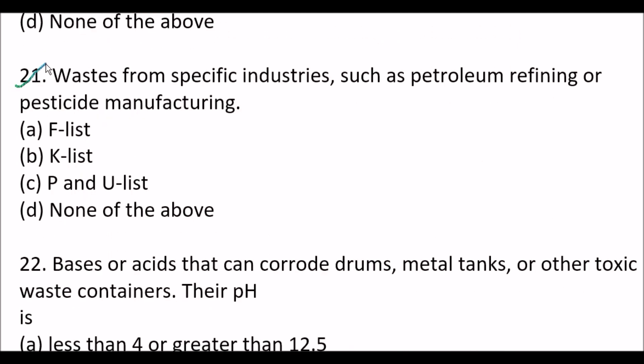Next question: Wastes from specific industries such as petroleum refining or pesticide manufacturing - Option A - F list, Option B - K list, Option C - P and U list, Option D - none of the above. The right answer is Option B - K list.